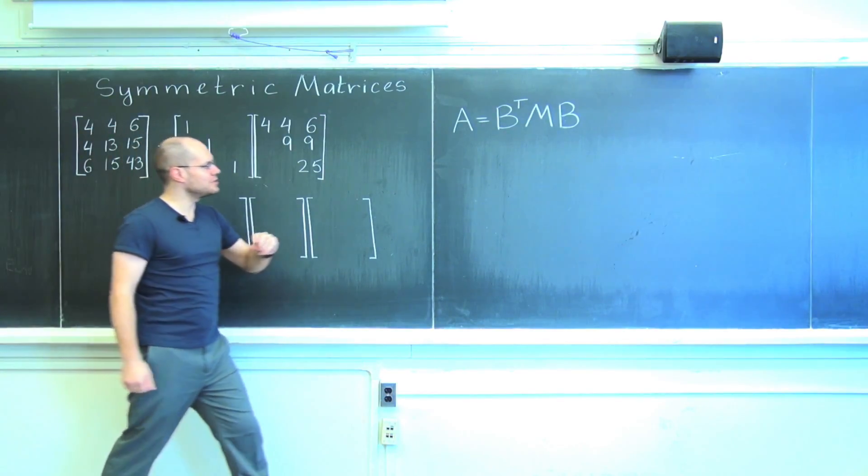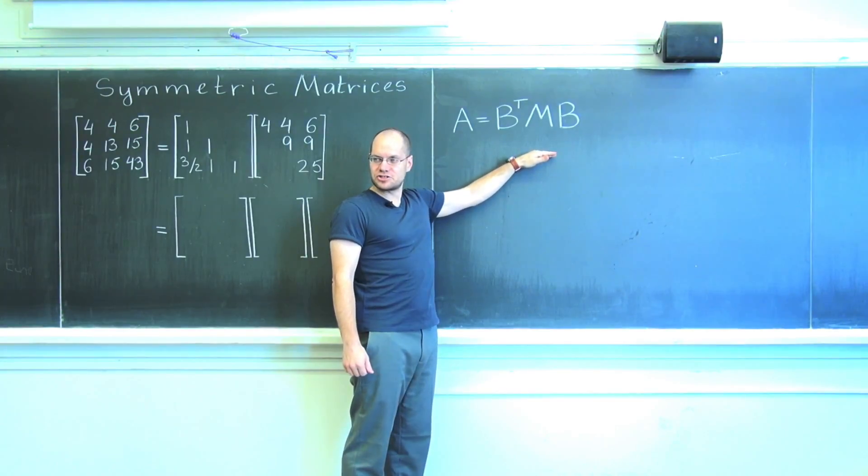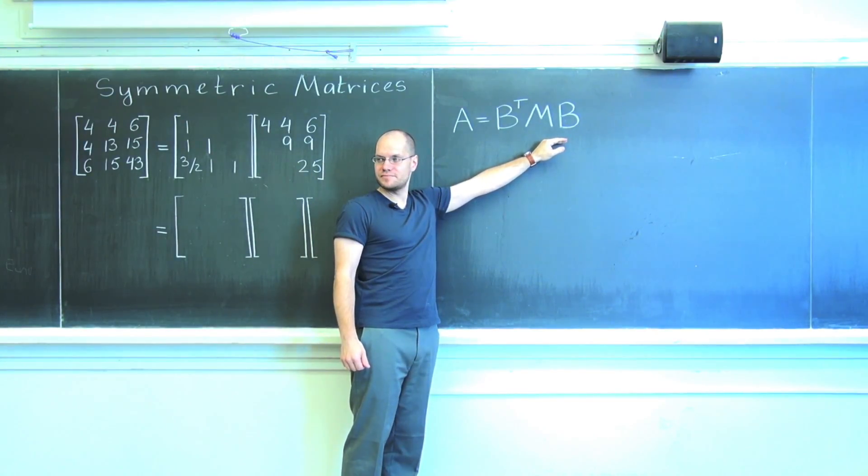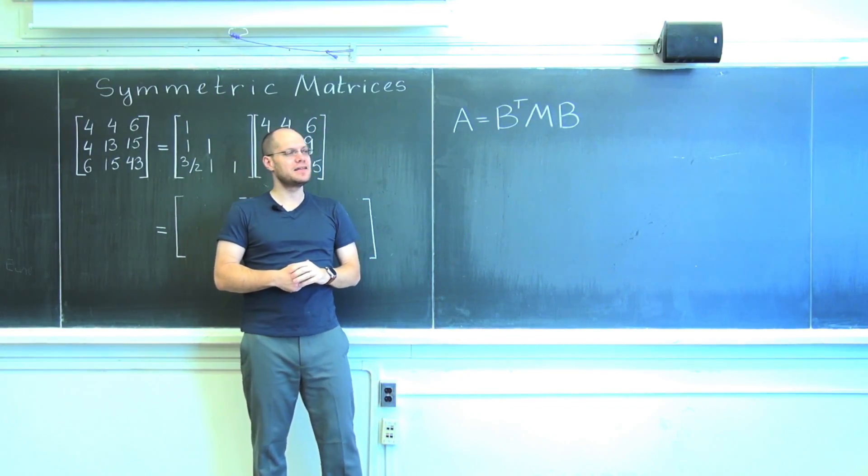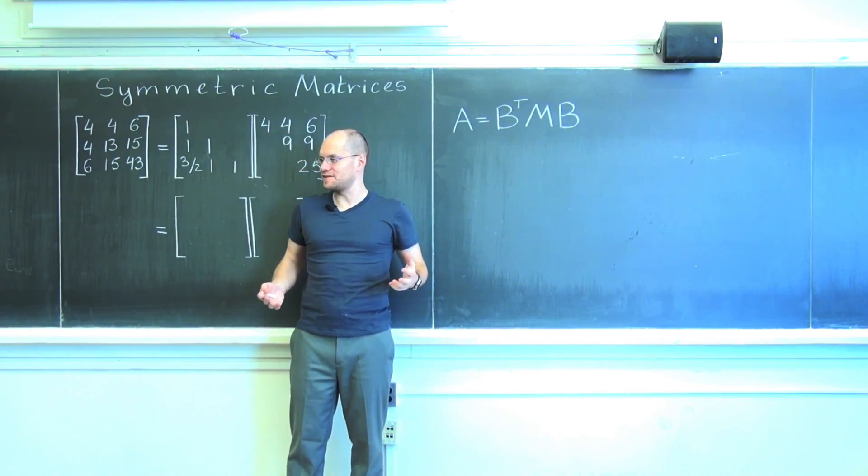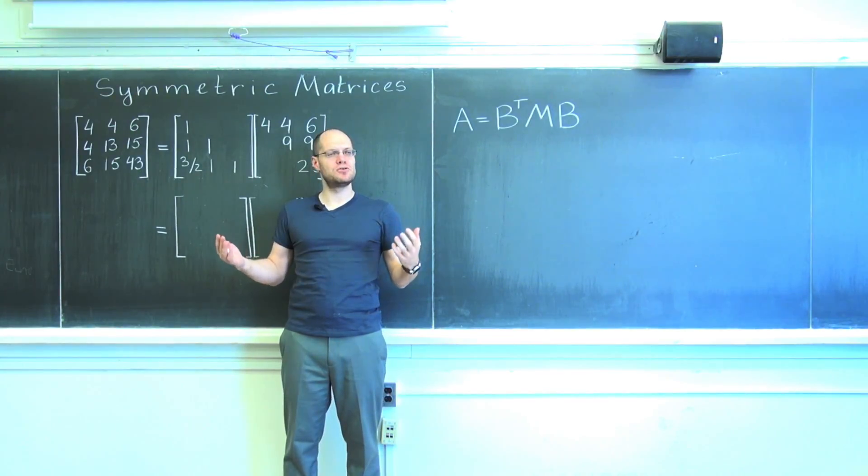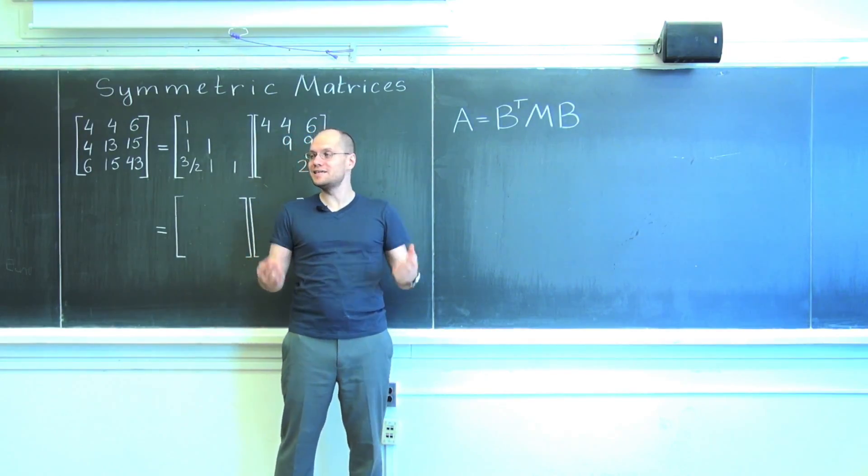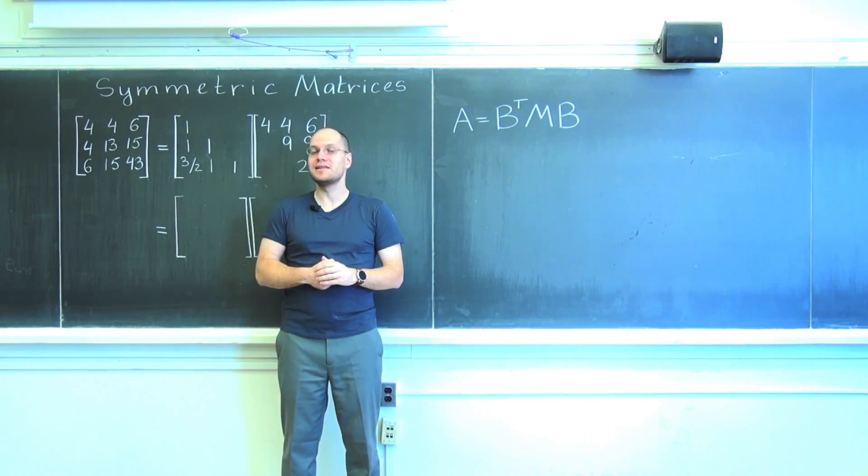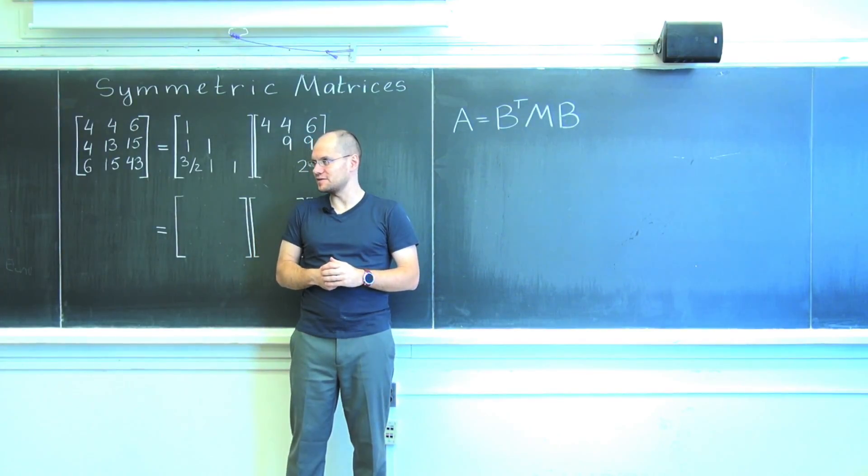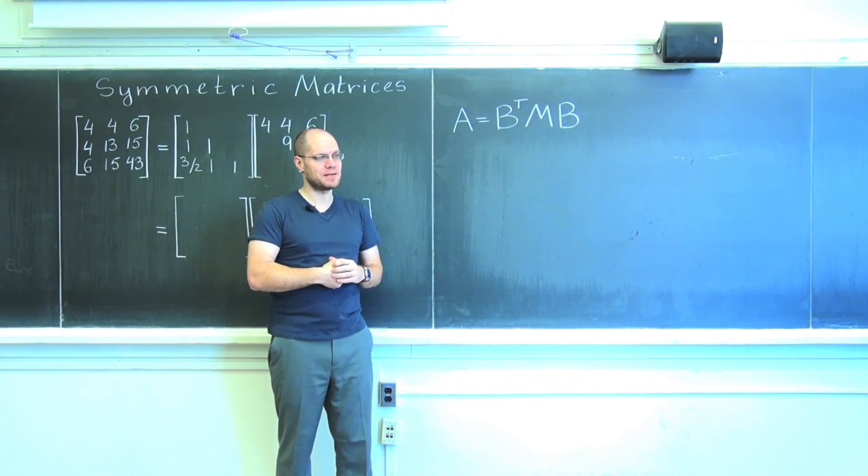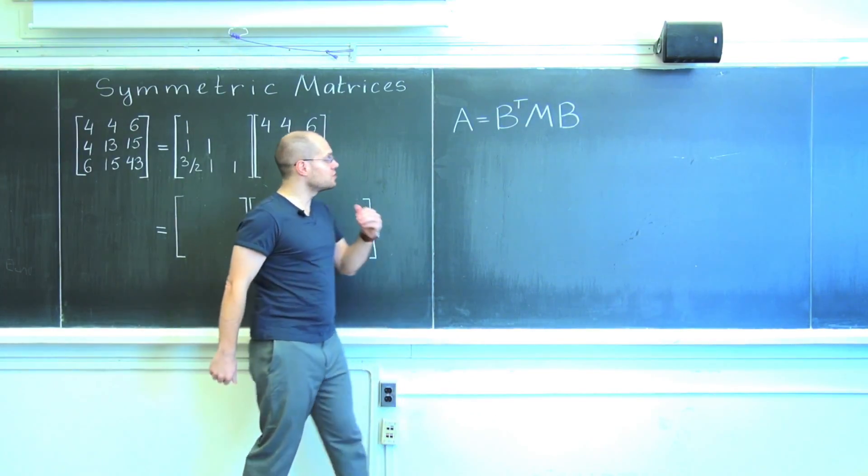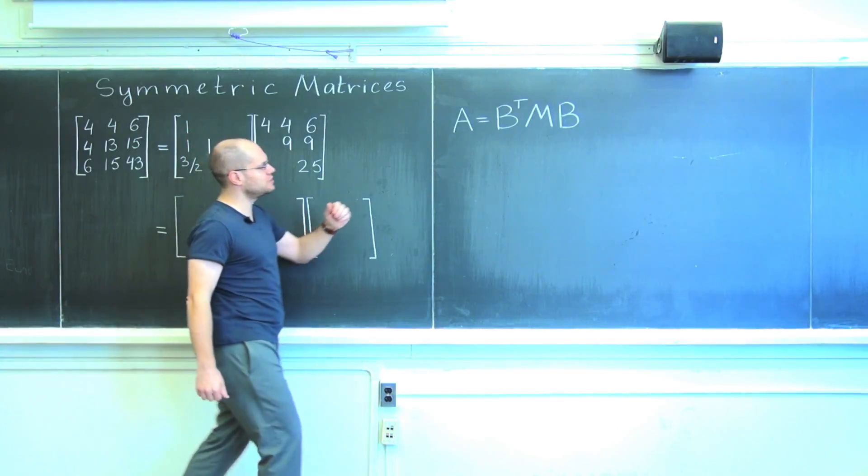Here's where I would like to start. At the end of last lecture, we considered B transpose B, which was of course symmetric. The question was, is it positive definite? The answer was, well, if the columns of B are linearly independent, then yes it is positive definite. And if they're not linearly independent, then it's positive semi-definite.